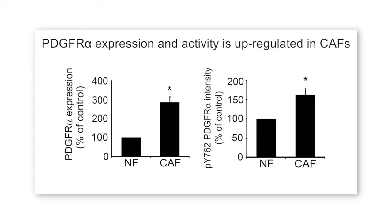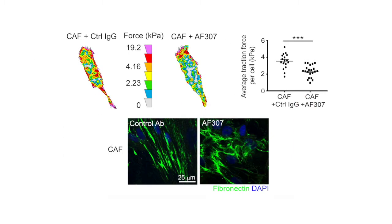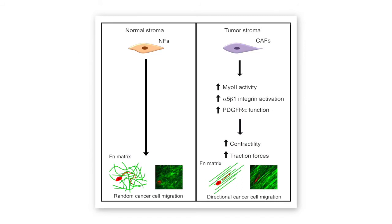Alpha-5-beta-1 integrin is known to engage in signalling crosstalk with PDGF receptors, which are often overexpressed in cancer-associated fibroblasts where they can be activated by PDGF ligands secreted from cancer cells. The researchers found that inhibiting PDGF receptor alpha reduced CAF cell contractility and alpha-5-beta-1 activity, resulting in lower traction forces and reduced matrix alignment. In summary, cancer-associated fibroblasts produce much higher myosin-2 activity, alpha-5-beta-1 integrin activity, and PDGF receptor alpha function, all leading to higher cell contractility, traction force, and fibronectin alignment.